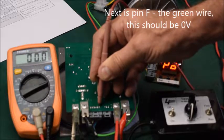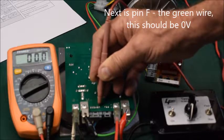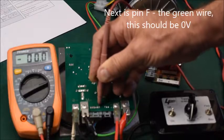Now move the meter lead to pin F which corresponds to the green wire. This should be zero. Write the value in the grey box on the sheet.